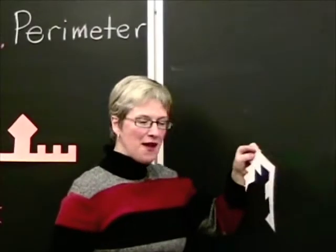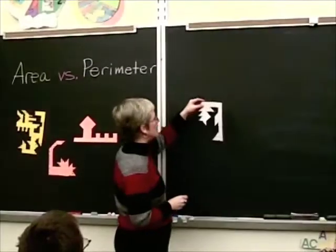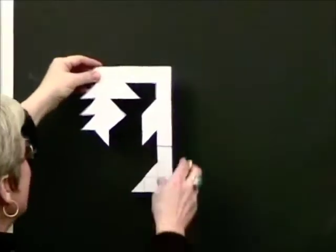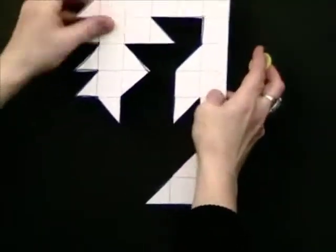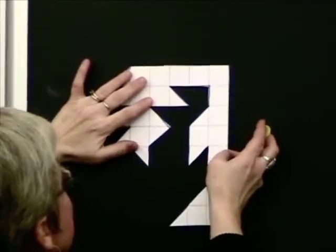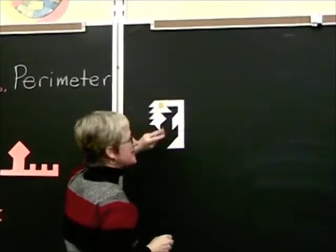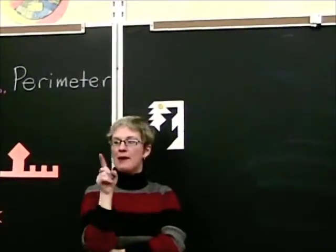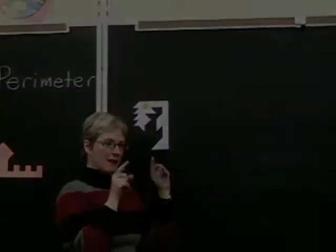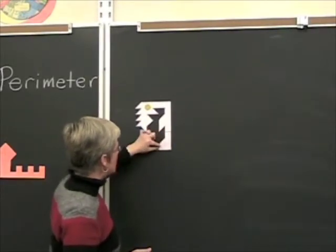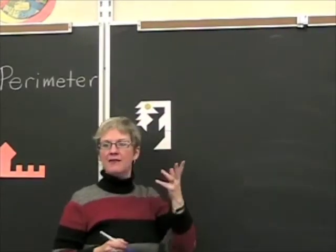After you're done with all this and you have your figure cut out, you're probably going to have something really interesting, something along these lines perhaps. Now, what we're going to do here is take a look and see if we can determine the perimeter. Remember, perimeter is the distance around a shape. Our shape is made up of one-unit segments and several diagonal segments.